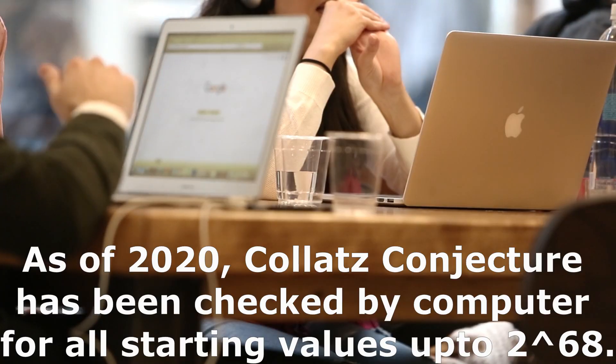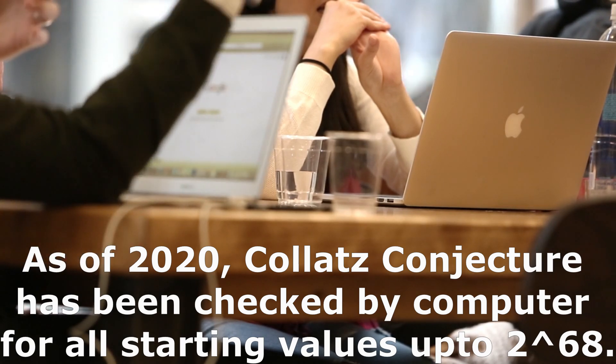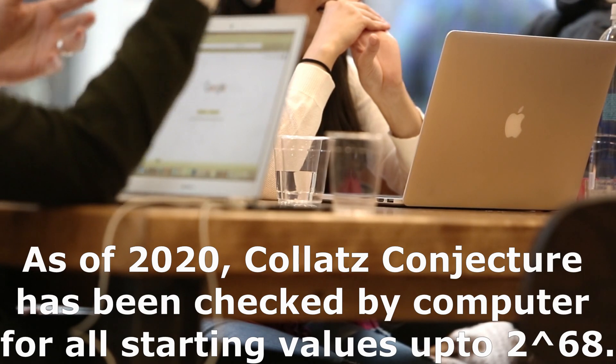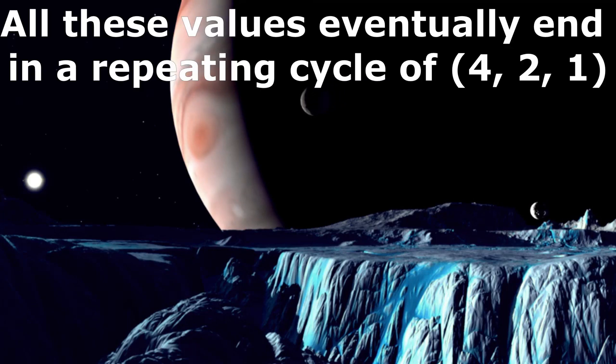As of 2020, Collatz conjecture has been checked by computer for all starting values up to 2 raised to the power 68. As a result, it has been found that all these values eventually end in a repeating cycle of 4 to 1.